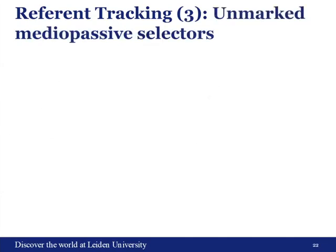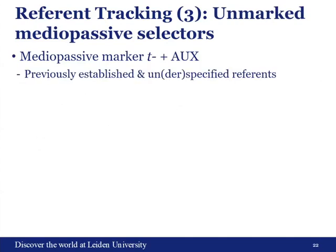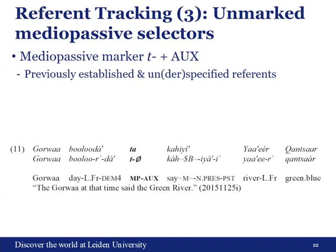Moving on to unmarked mediopassive selectors. They consist of the mediopassive marker T plus an auxiliary, and they are used for previously established and underspecified or unspecified reference. For example, 'the Gorwa at that time' is very obviously an underspecified referent, and the unmarked mediopassive selector marks and emphasizes that underspecified status.